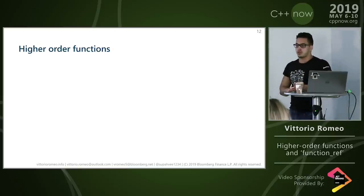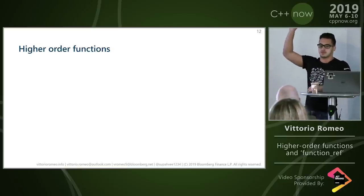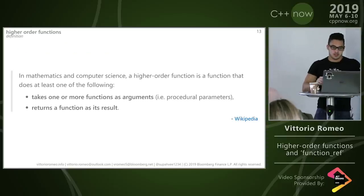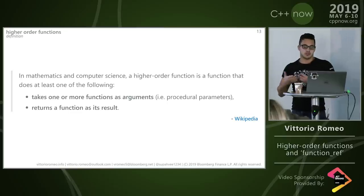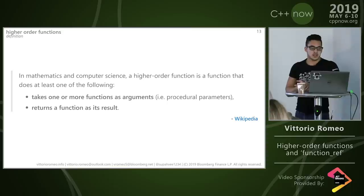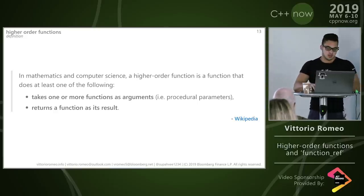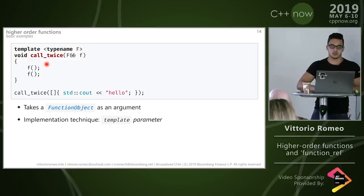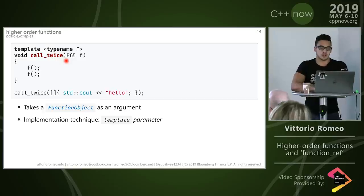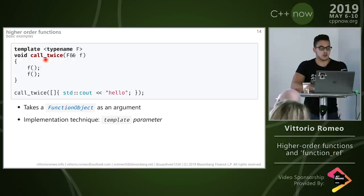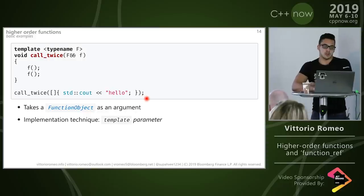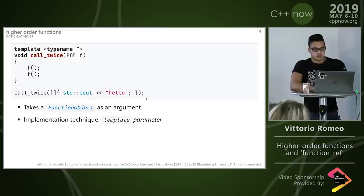Higher-order functions — how many of you know what a higher-order function is? In general, what Wikipedia says is usually a good start: a higher-order function is just a function that either takes another function as an argument or returns another function as its result. In C++ you can see a very simple example: a function called 'call_twice' that accepts some callable object f by forwarding reference and invokes it twice in the body. We call this abstraction with a lambda that prints 'hello' and the result is 'hello hello' printed to stdout.